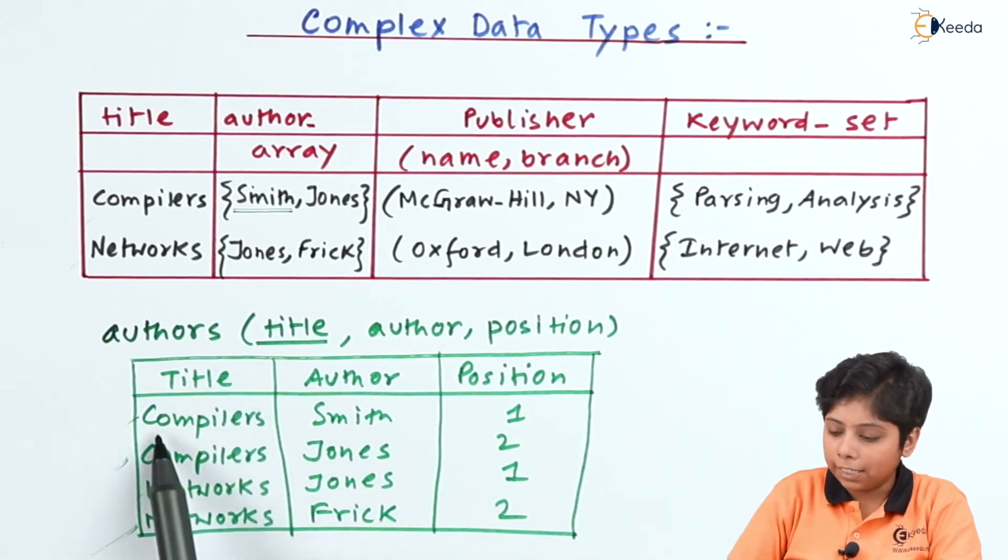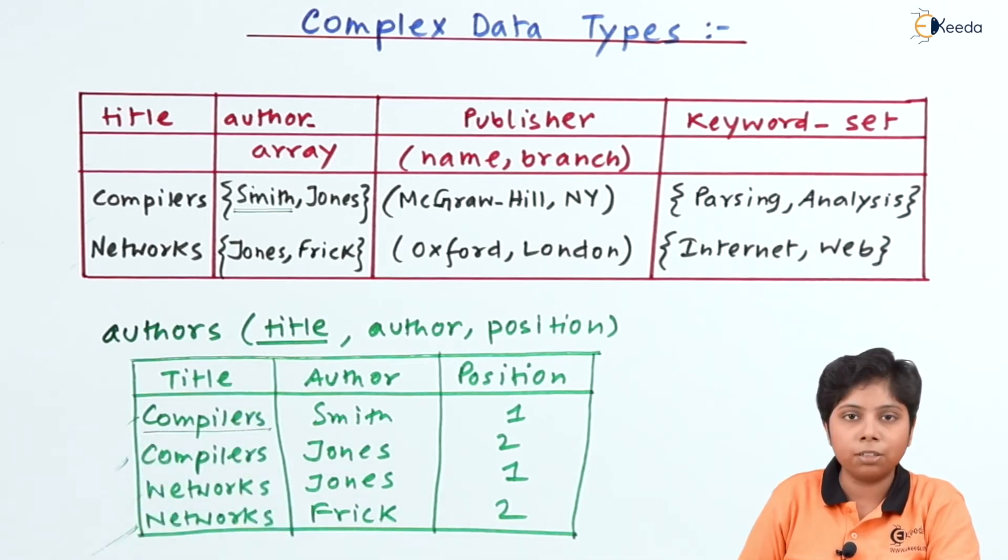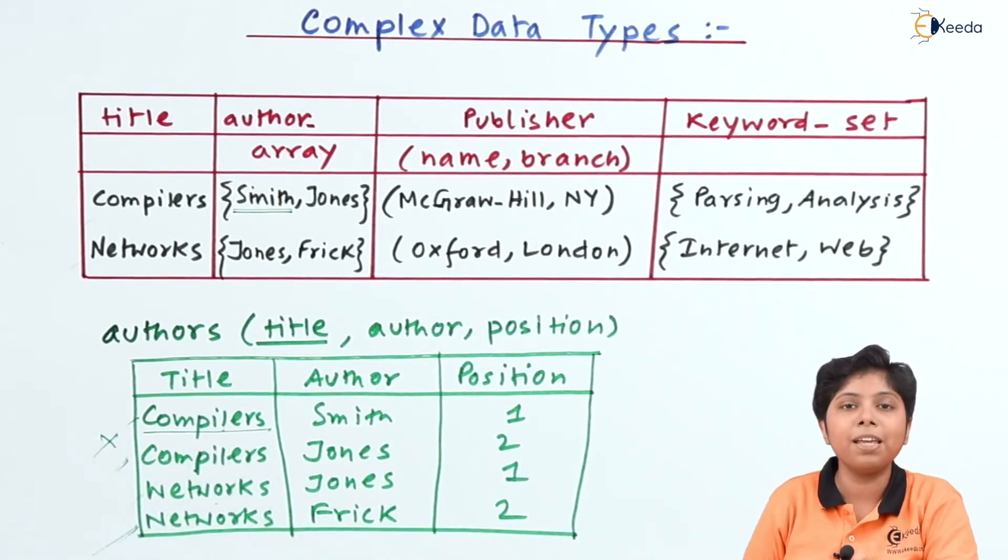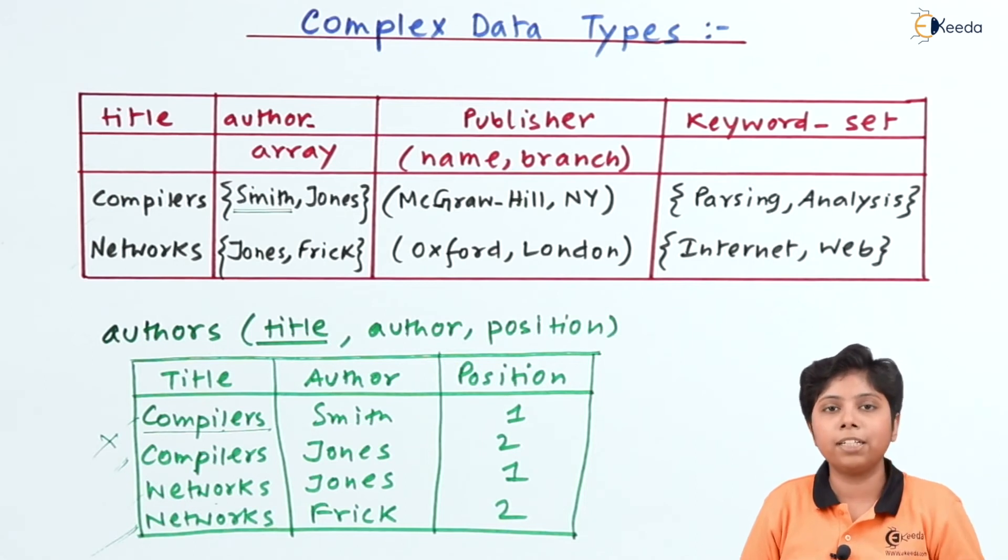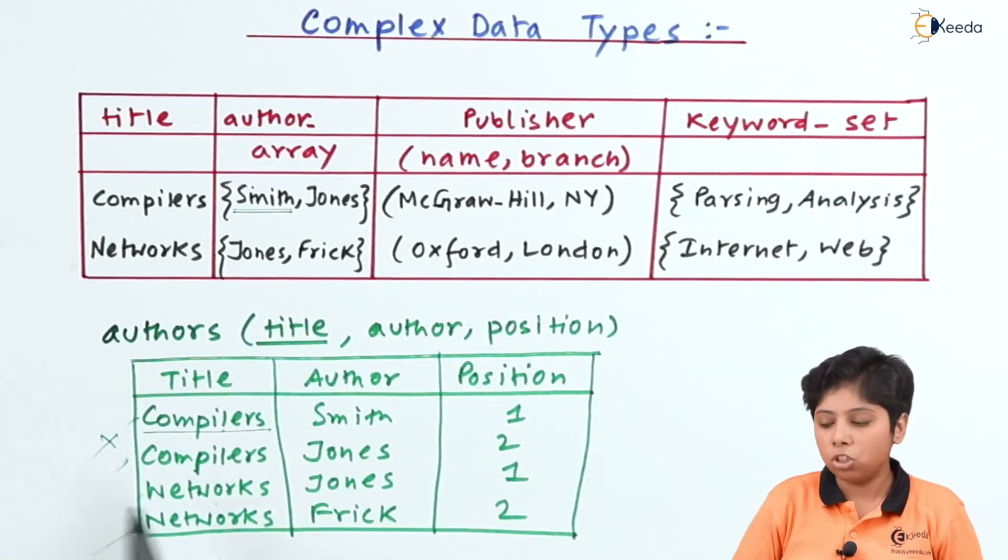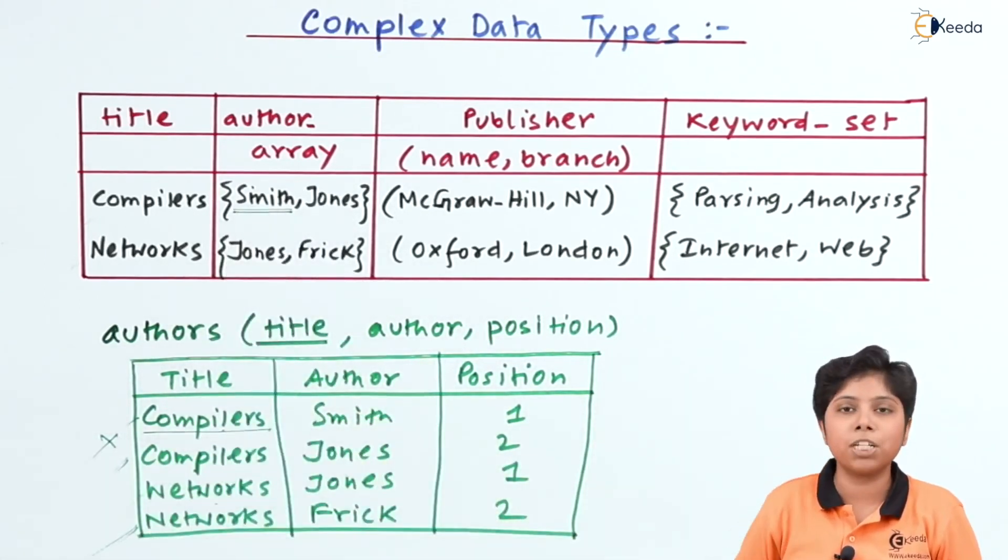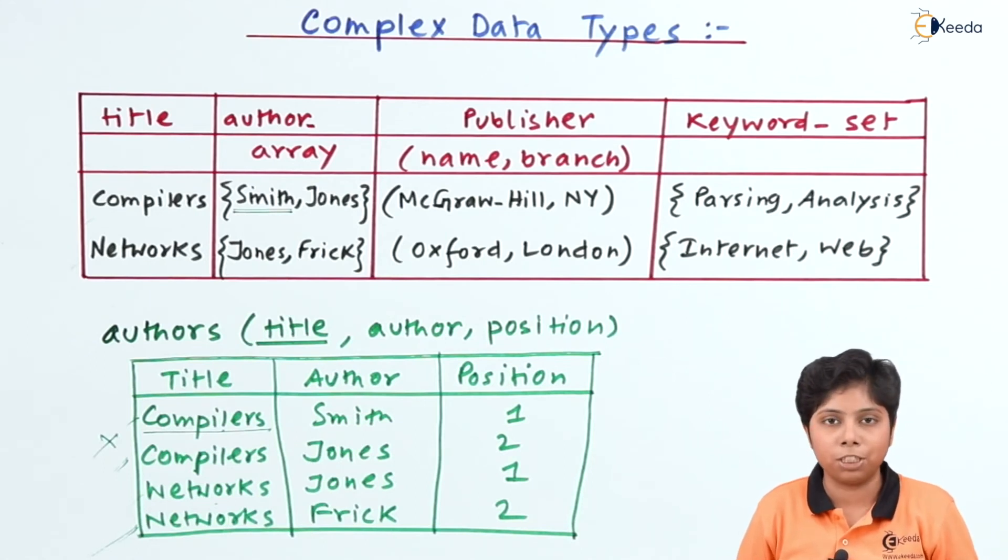Now see that we also have the titles repeated, which is the primary key of this author relation. So if title is being the primary key on the author's relation, it cannot happen because the compilers and networks are being repeated here. So that's the need of the complex data type, that we need a combination of an author array not being in the position, but the array will show that Smith in the first position and Jones in the second position.